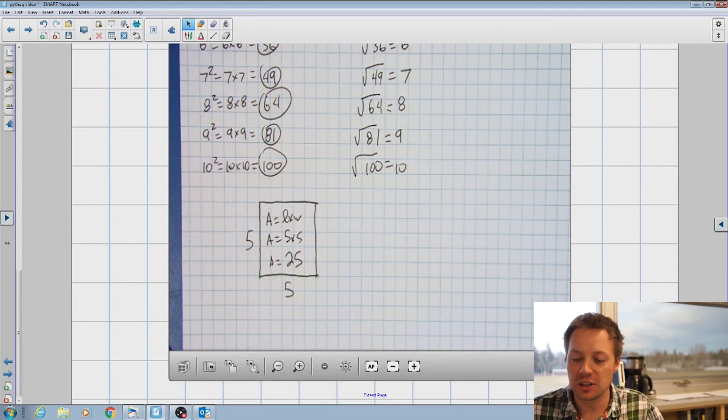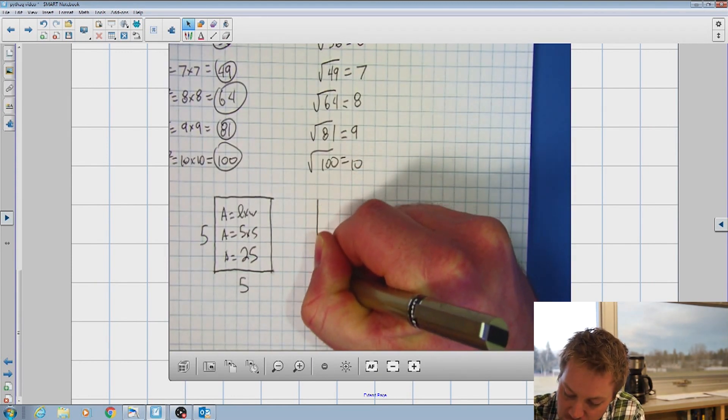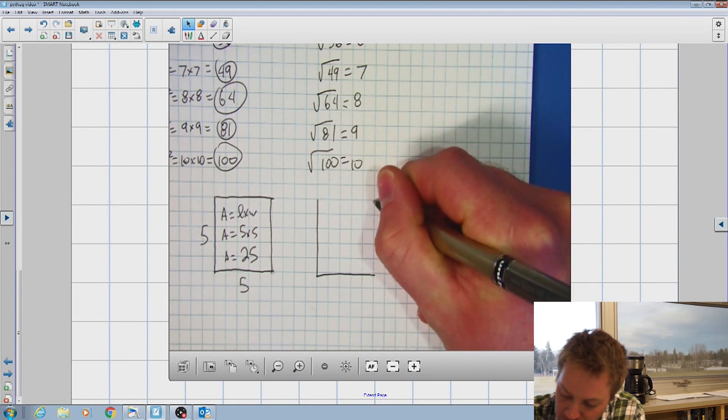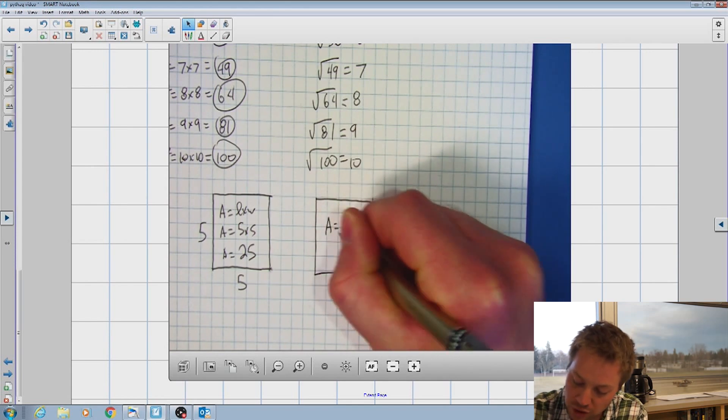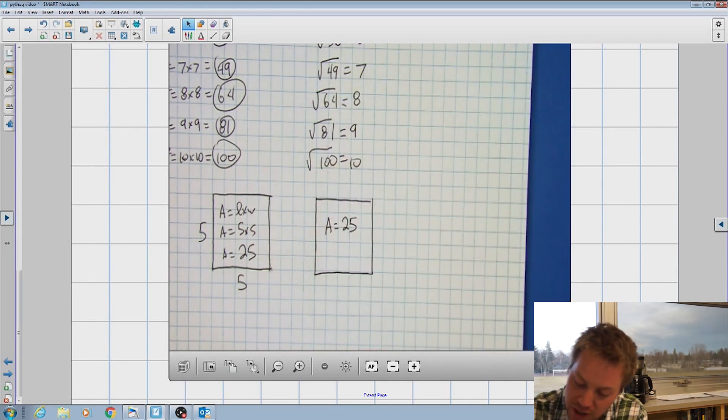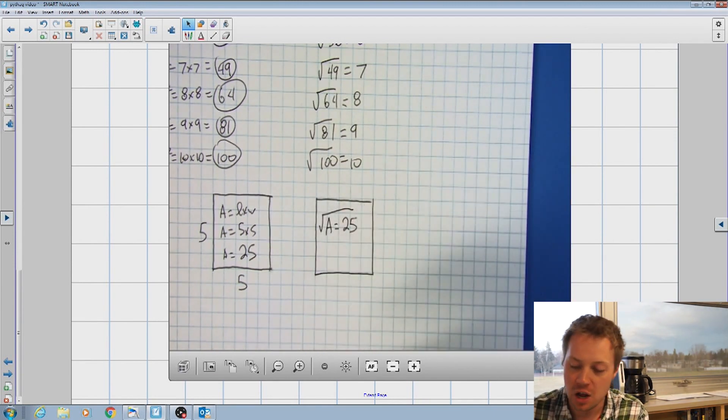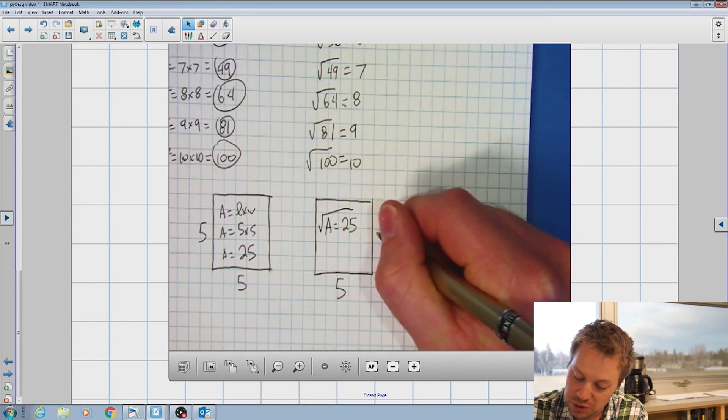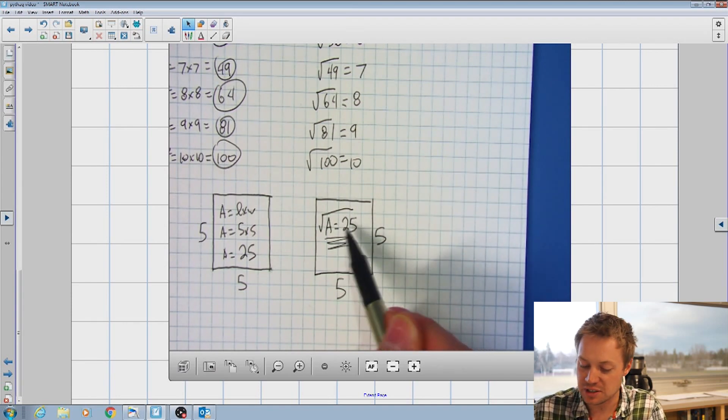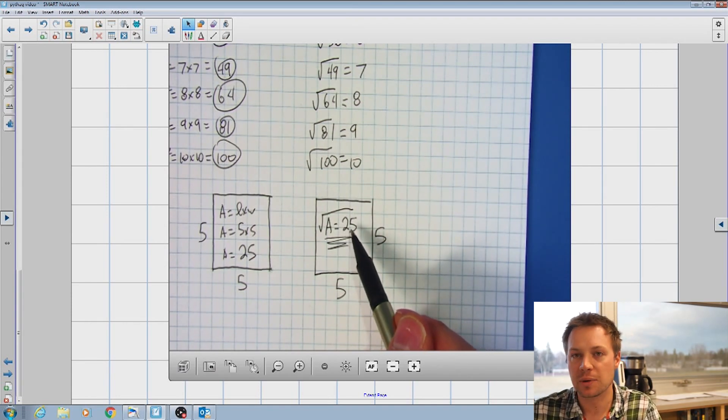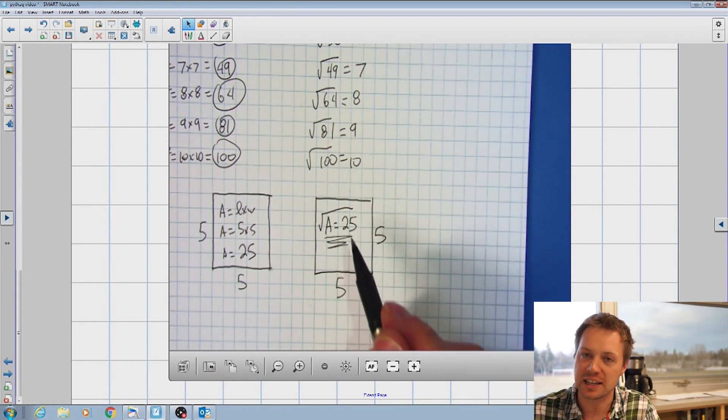Now we can also use that information to go backwards. And what I mean by that is that if we're given a square with an area, we can also take that area and find the side lengths from it. So if I'm just given the same square, but instead I'm told that the area is 25, all I need to do is take the square root of that. And by taking the square root of that, we're technically finding what those side lengths are. I see a lot, a lot, a lot that students just divide this by four. They think that's a perimeter. It doesn't work. 25 divided by four is not the side length. It doesn't work like that. You have to take the square root.